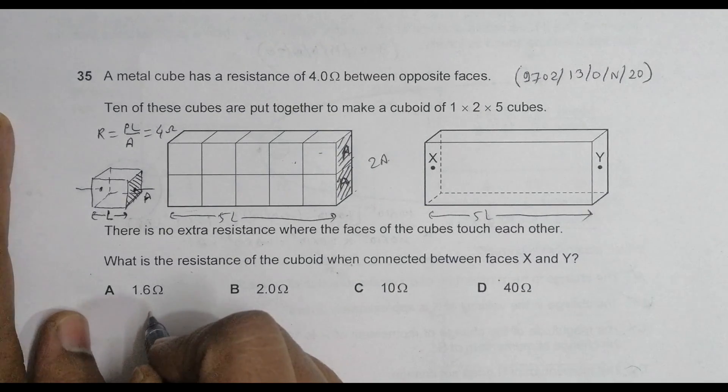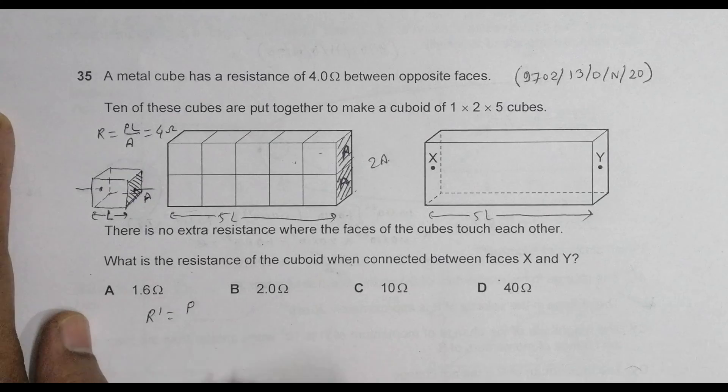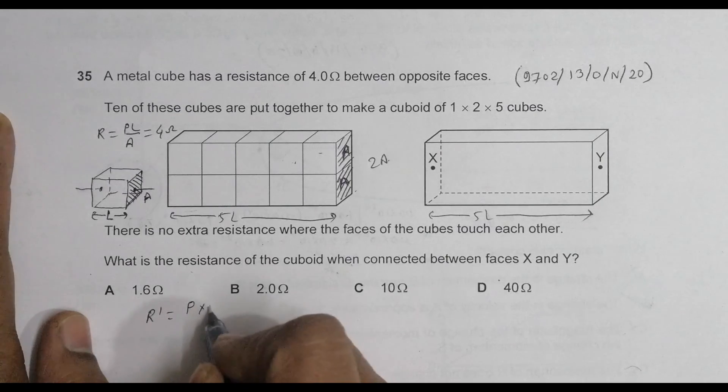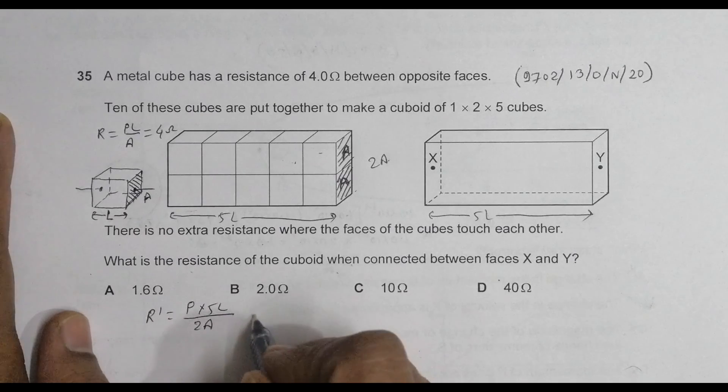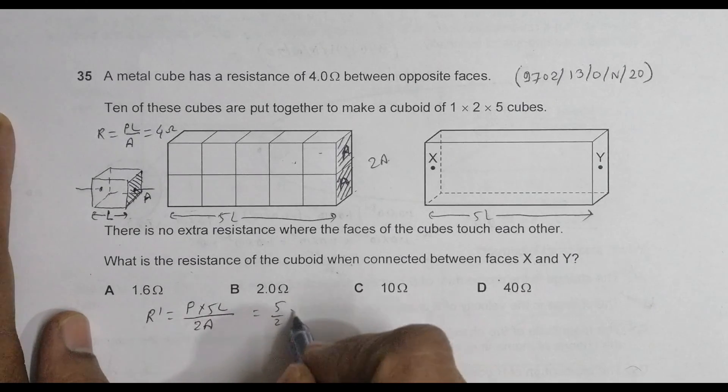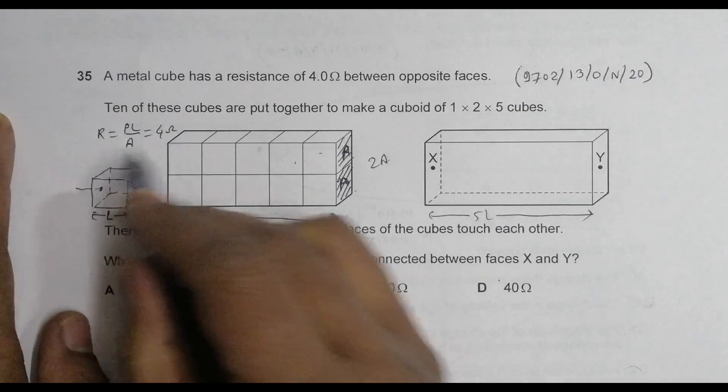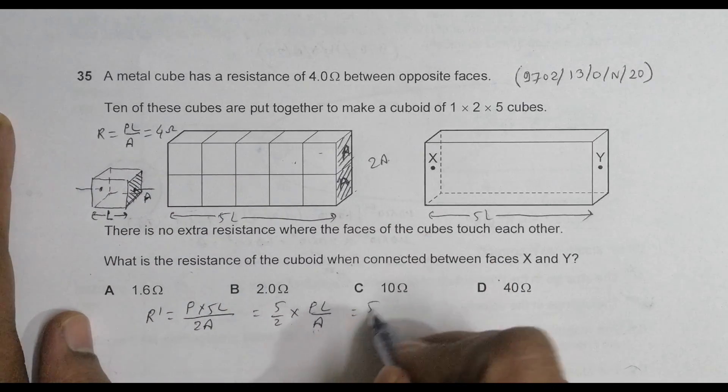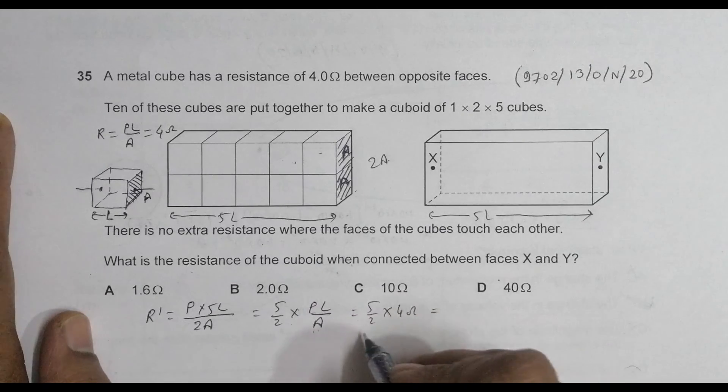So that's why our new resistance for the whole large board will be equal to R prime is equal to ρ into 5L by 2A, equal to 5 by 2 into ρL by A, and this whole thing is equal to 4 ohm. So it is 5 by 2 into 4 ohm equal to 10 ohm.